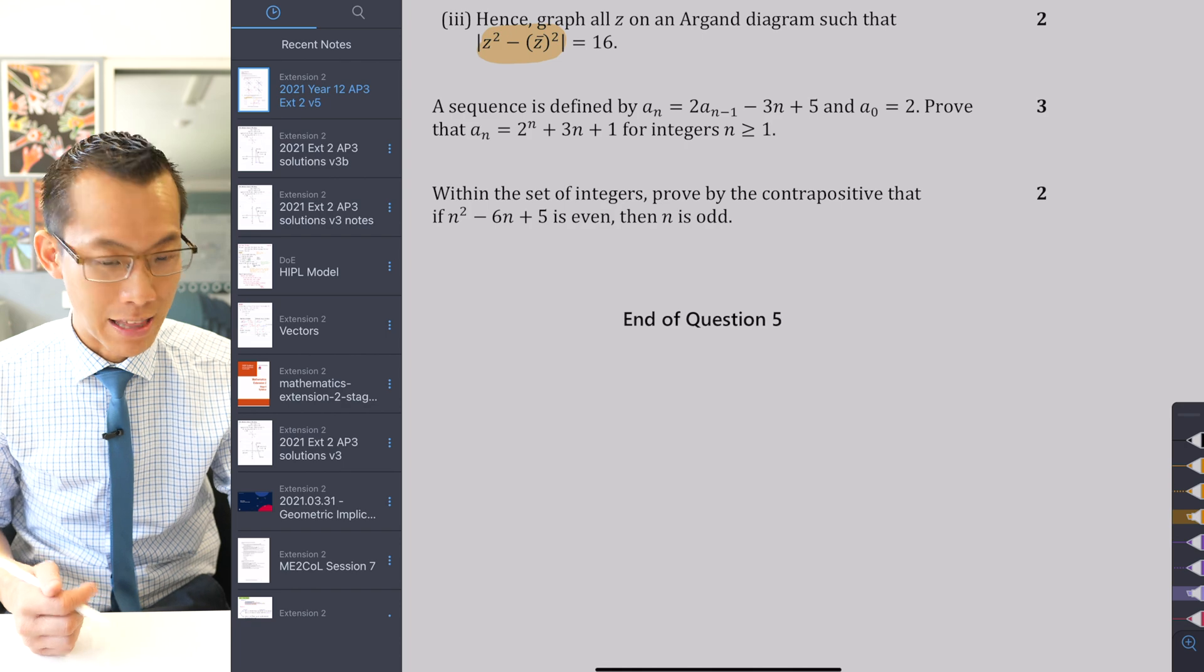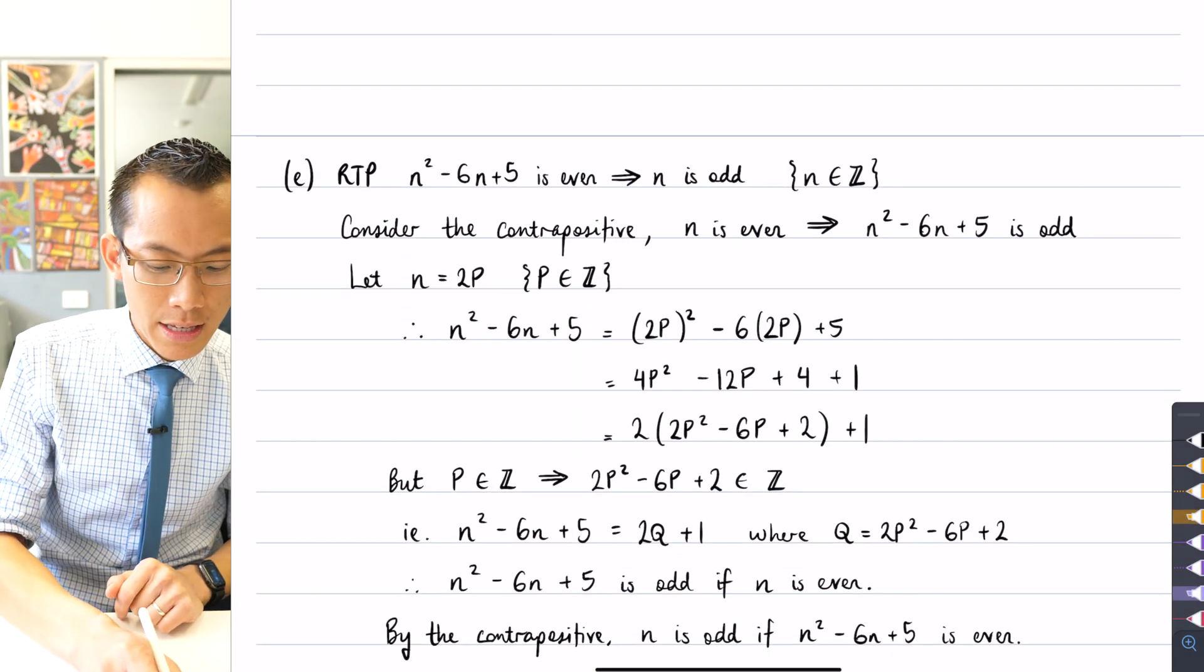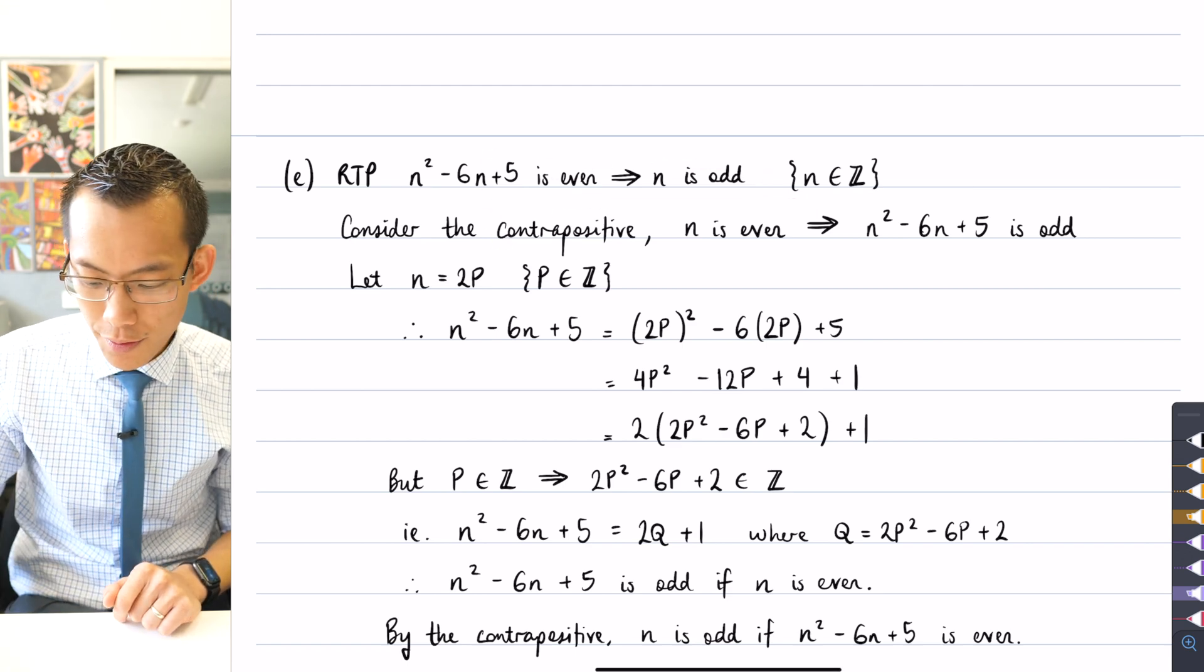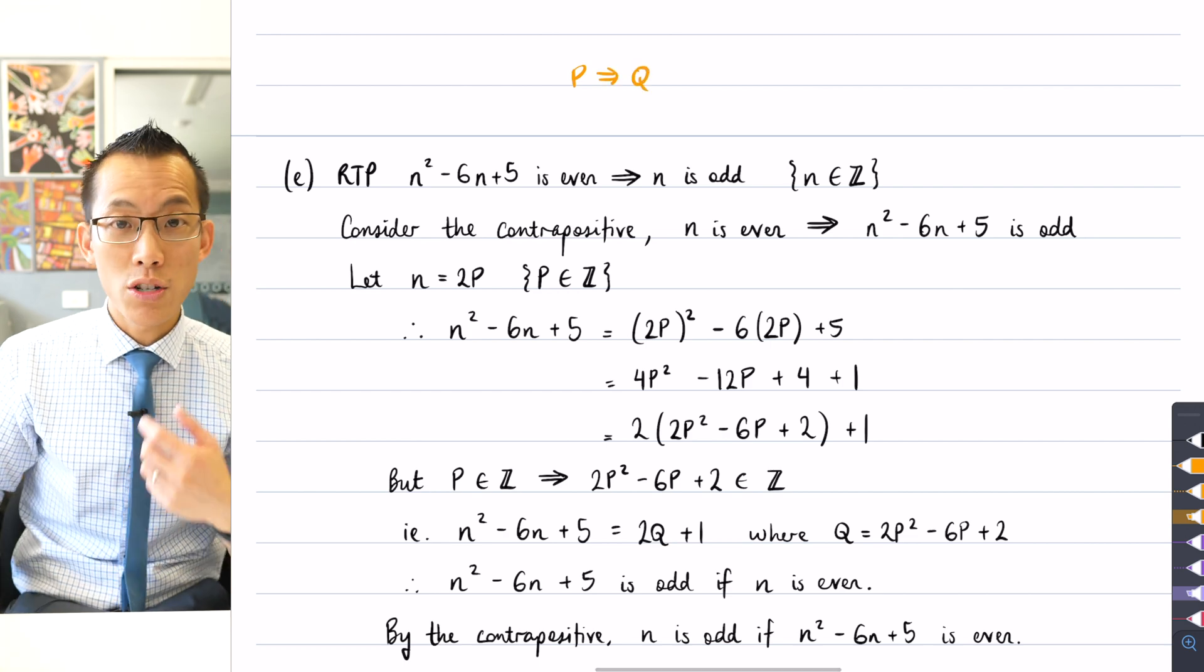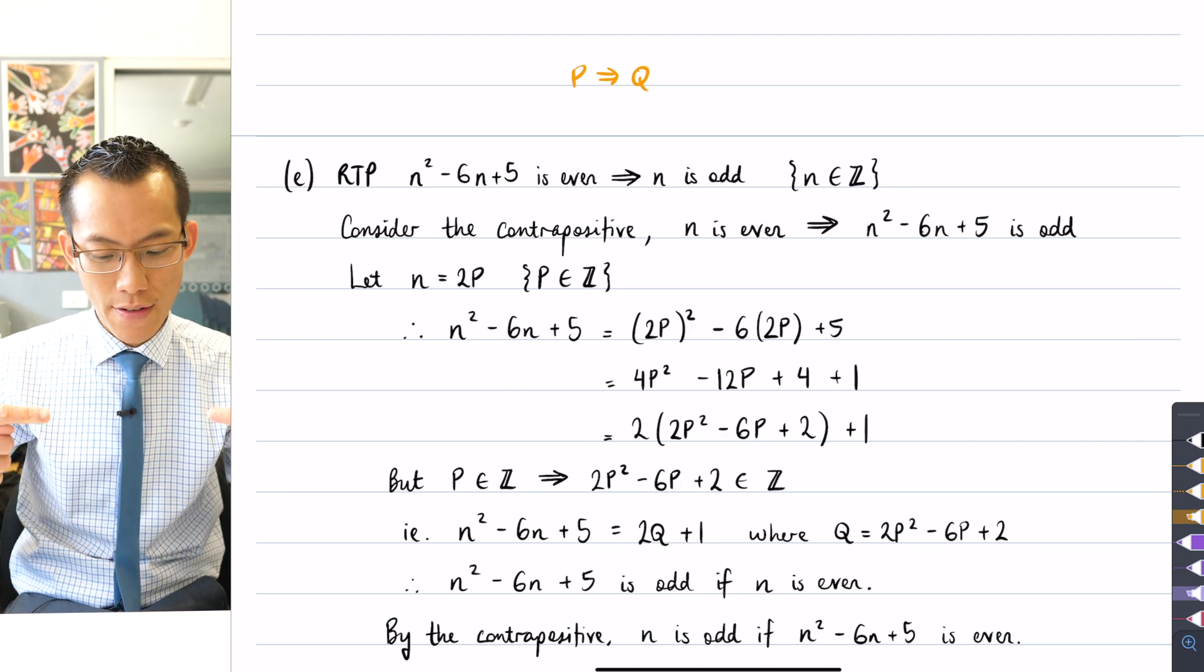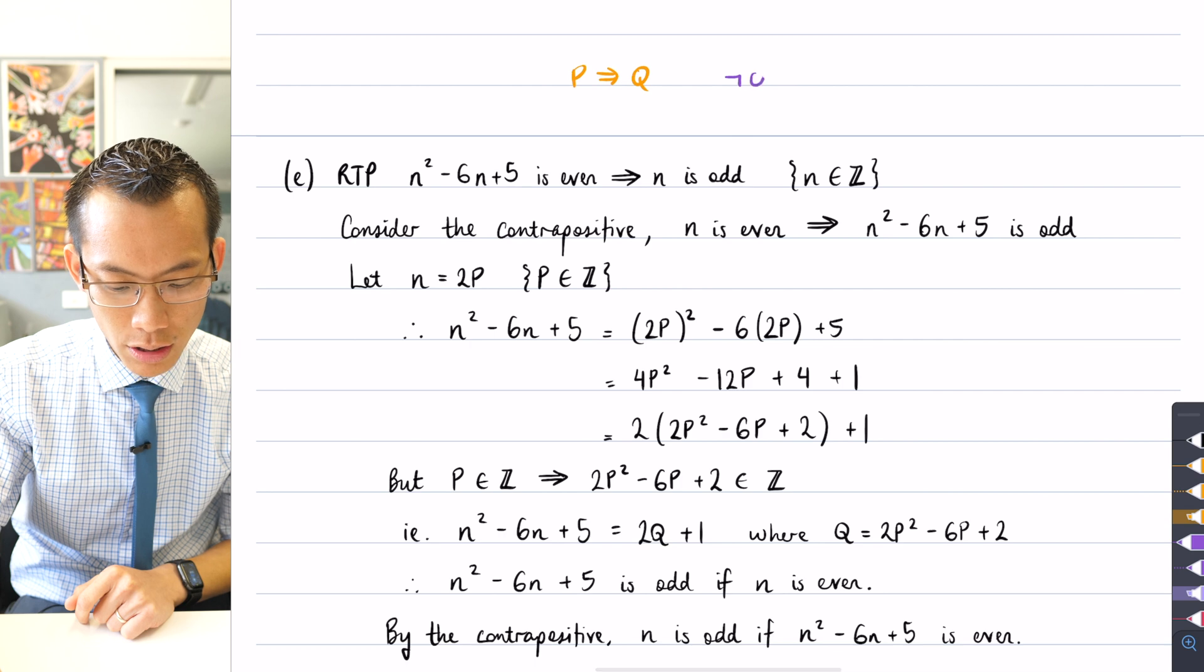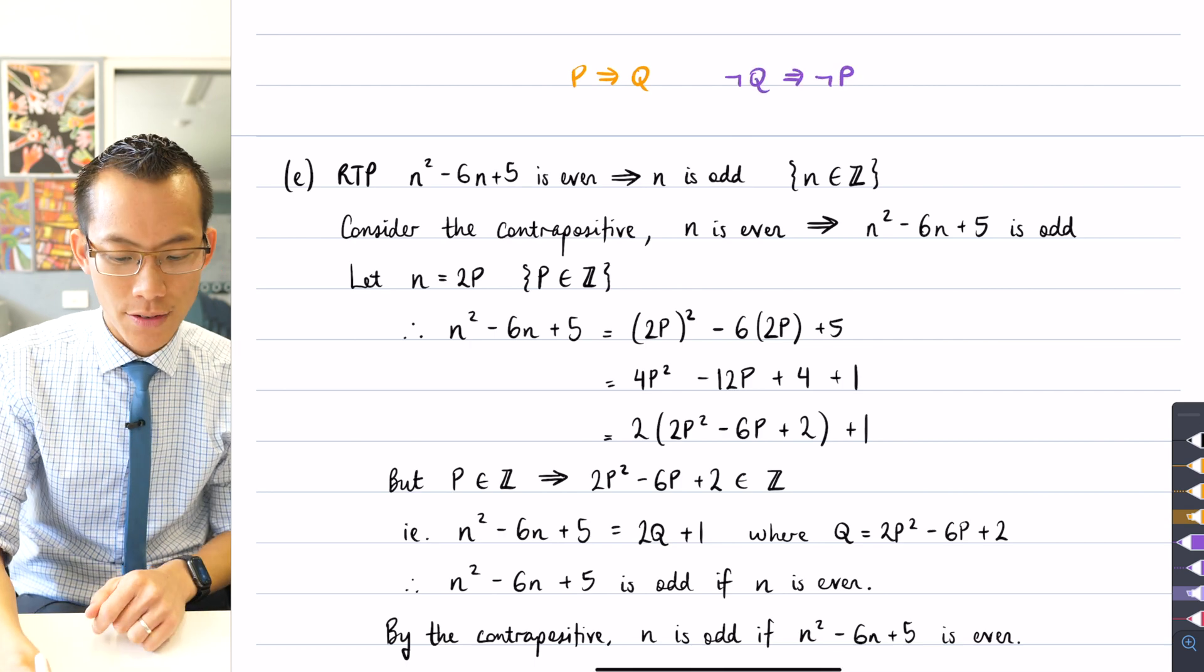Let's see what that looks like. Here comes question 5e. So here's the original statement. The contrapositive of p implies q is to get the negation of everything and then reverse the order. So it would be not q implies not p. Now you can see how I've done this.